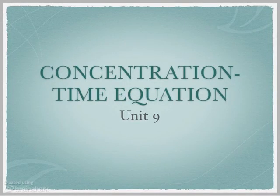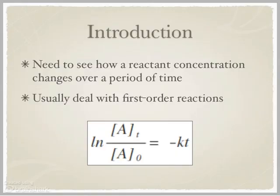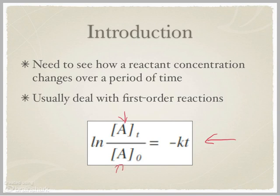In this tutorial I want to go over the relationship between concentration and time when dealing with reaction rates. You need to see how reactant concentration changes over a period of time, and you can do that using the equation: the natural log of the concentration at a particular time over the initial concentration equals negative K times T, where K is your rate constant and T is time. When dealing with this type of relationship, you're going to be working with first-order reactions only.